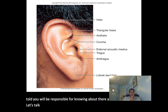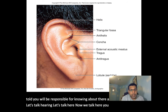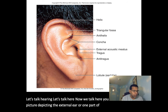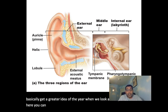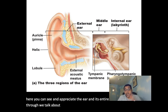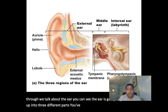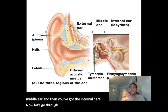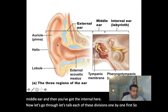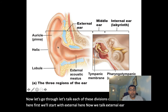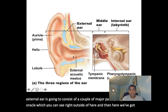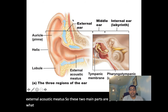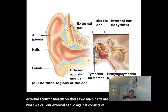Let's talk hearing and the ear. Here's a picture of the external ear — one part of it. When we look at the ear in its entirety, the ear is divided into three parts: the external ear, the middle ear, and the internal ear.